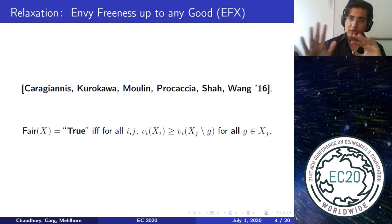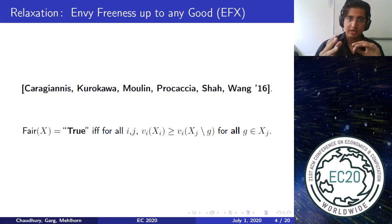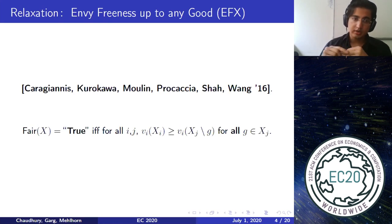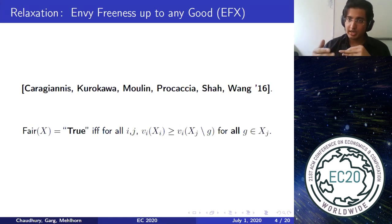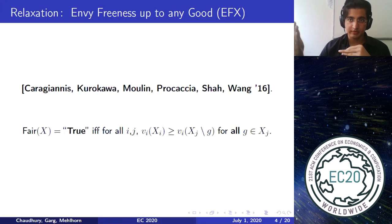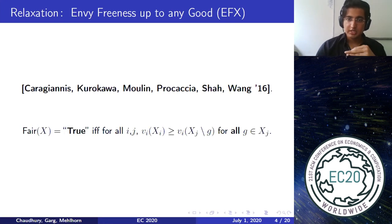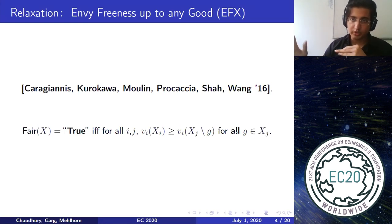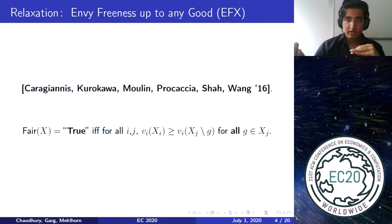There are several relaxations; I'll focus on the strongest analog of envy-freeness for indivisible goods, called envy-freeness up to any good, or EFX. An allocation is EFX if, for every pair of agents i and j, even if i strictly prefers j's bundle, removing any single good from j's bundle makes the envy disappear. The quantifier is important: no matter which good we remove from j's bundle, following that removal the envy disappears. For additive valuations, this is equivalent to removing the least valuable good from j's bundle according to i.